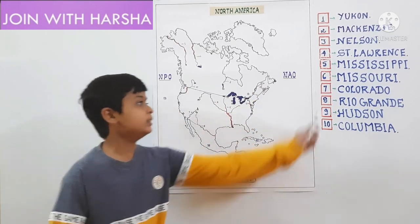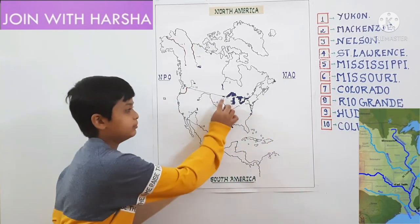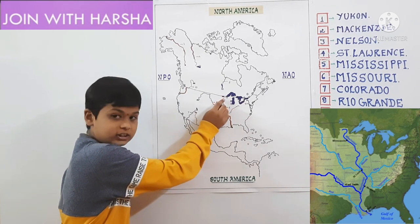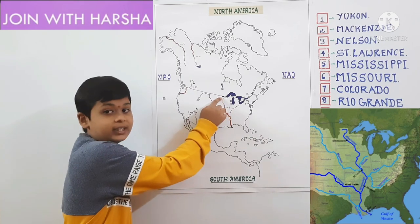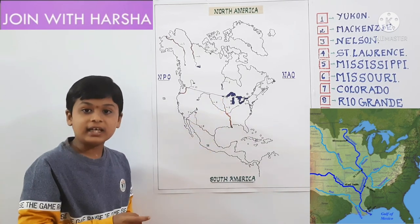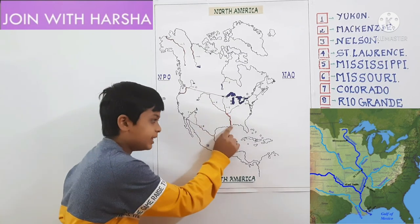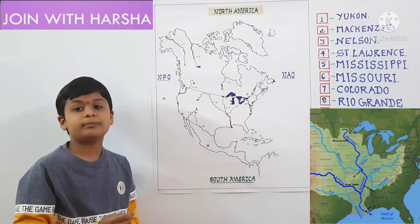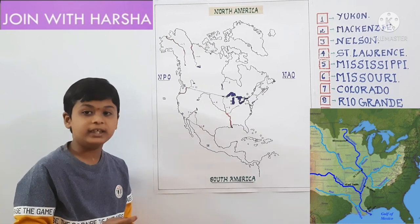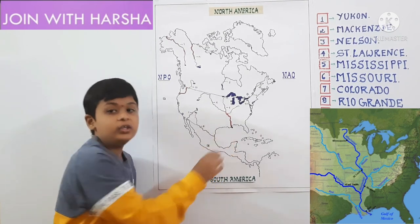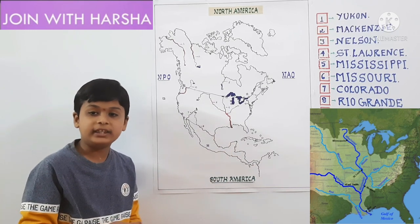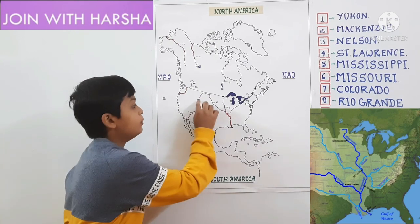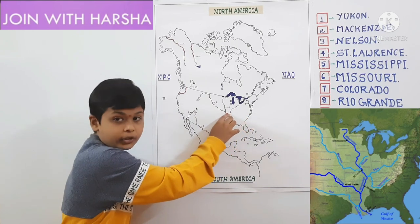Next one is Mississippi River. In Yellowstone National Park, there is a lake called Lake Itasca. Lake Itasca is the source of Mississippi River. Mississippi River is the second longest river in USA and North America. It flows towards South and drains in the Gulf of Mexico. It has 3,730 kilometers. It has two tributaries: first one is Missouri River and second one is Ohio River.